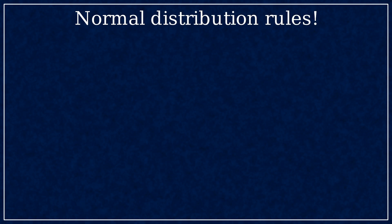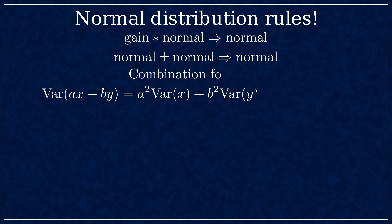Now the rules to remember. Multiply by a constant gain, the distribution stays normal. Add two noisy signals together, still a normal distribution. Here's the combination formula for the variance. We'll be dealing with independent samples, so you can forget about that last part.